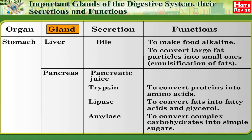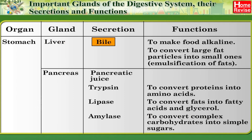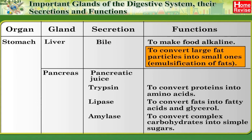Liver: secretion — bile; function — to make food alkaline and to convert large fat particles into small ones, that is, emulsification of fats.